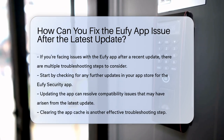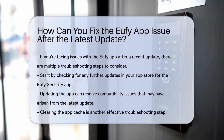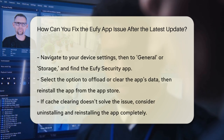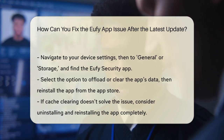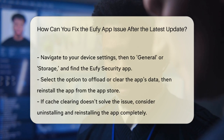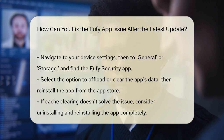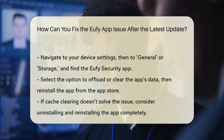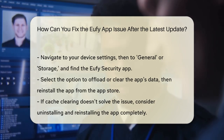Another common issue is related to app cache. Clearing the cache can often resolve problems. Go to your device settings, scroll down to the General or Storage section, and find the Eufy Security app. Select the option to offload or clear the app's data, then reinstall the app from the App Store. This will clear any corrupted data that might be causing the issue.